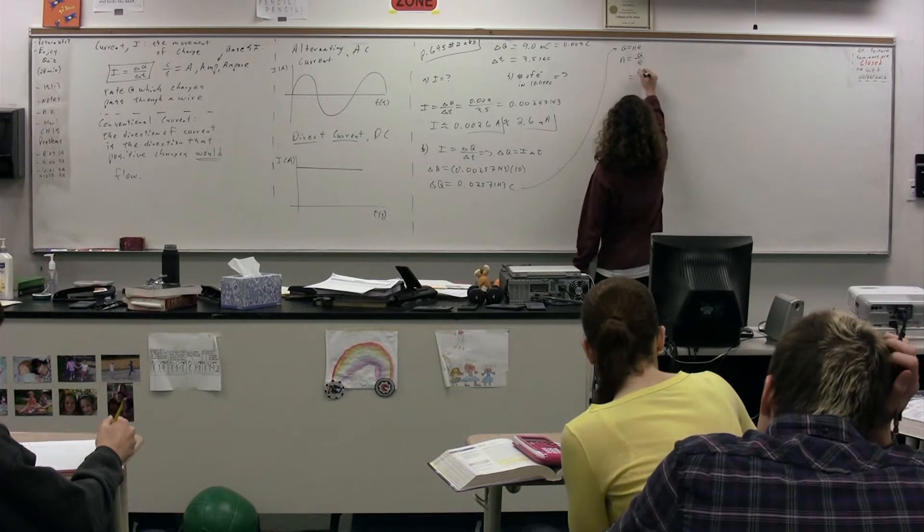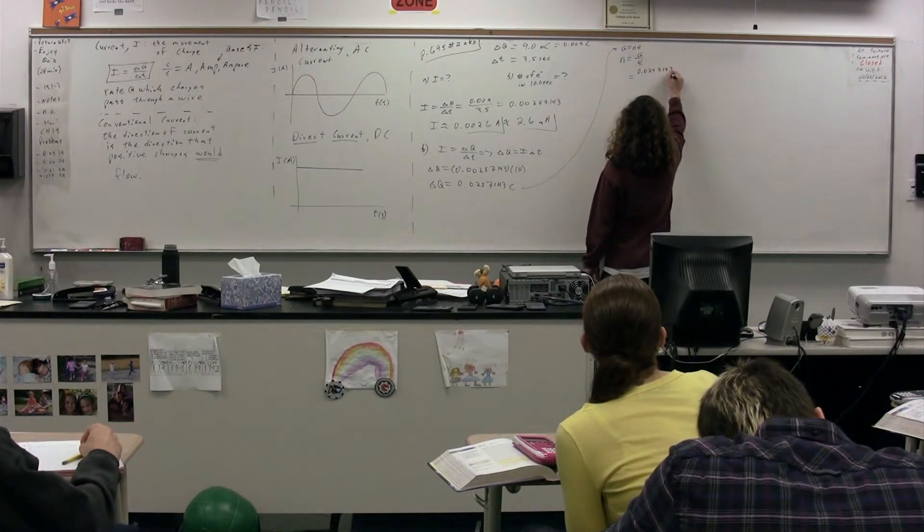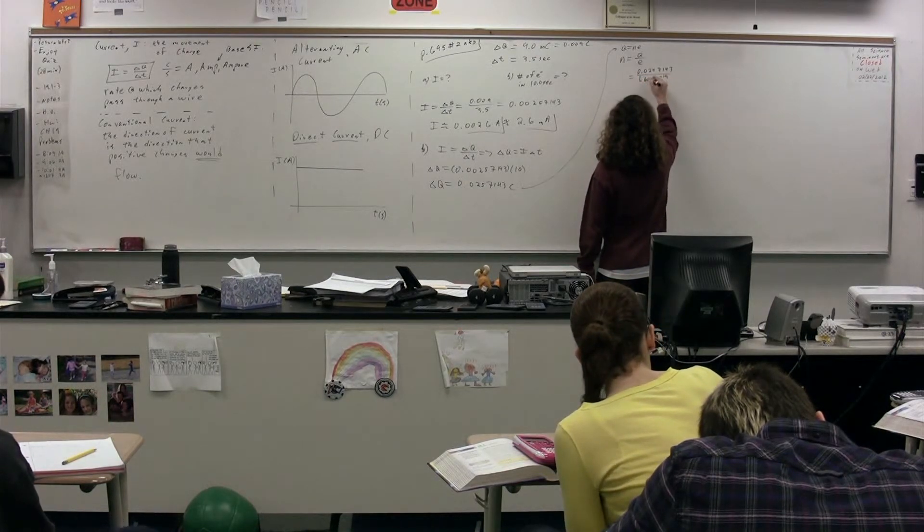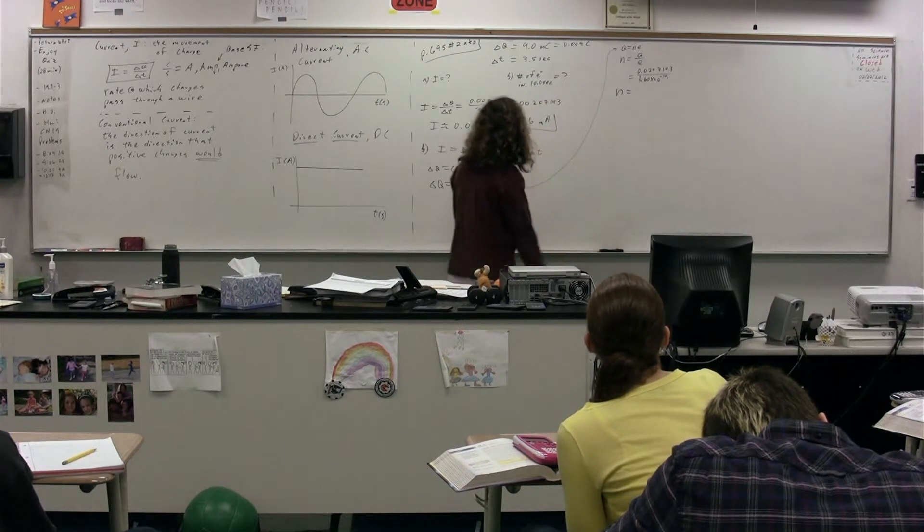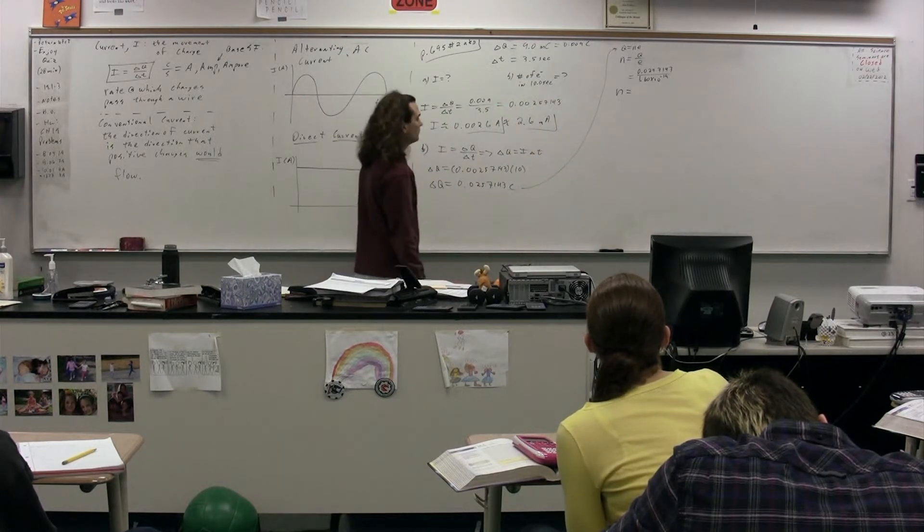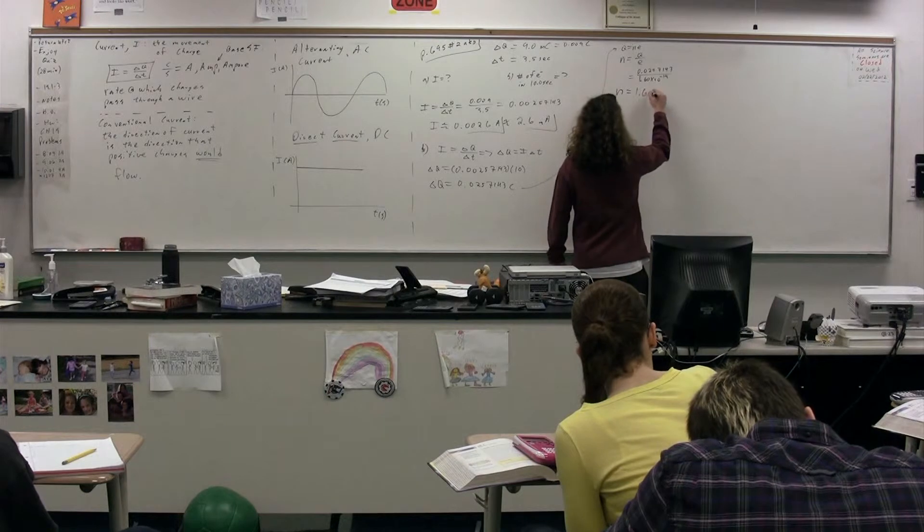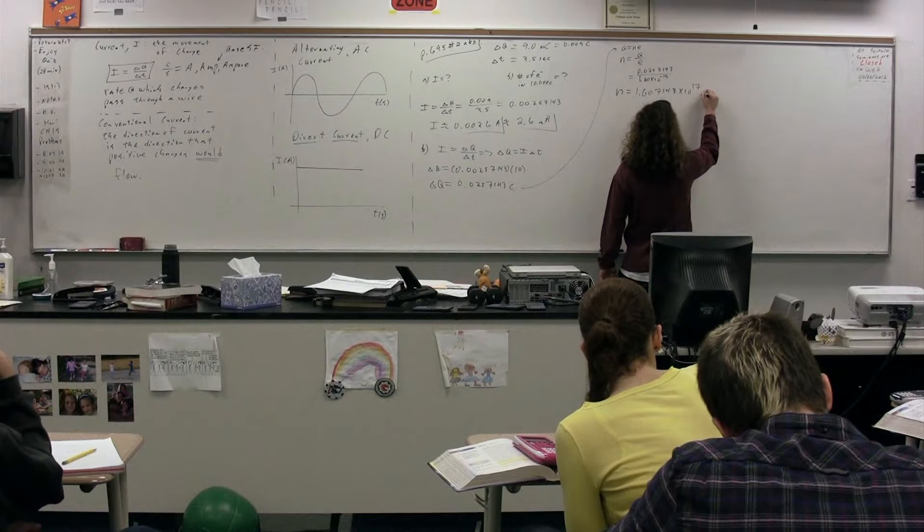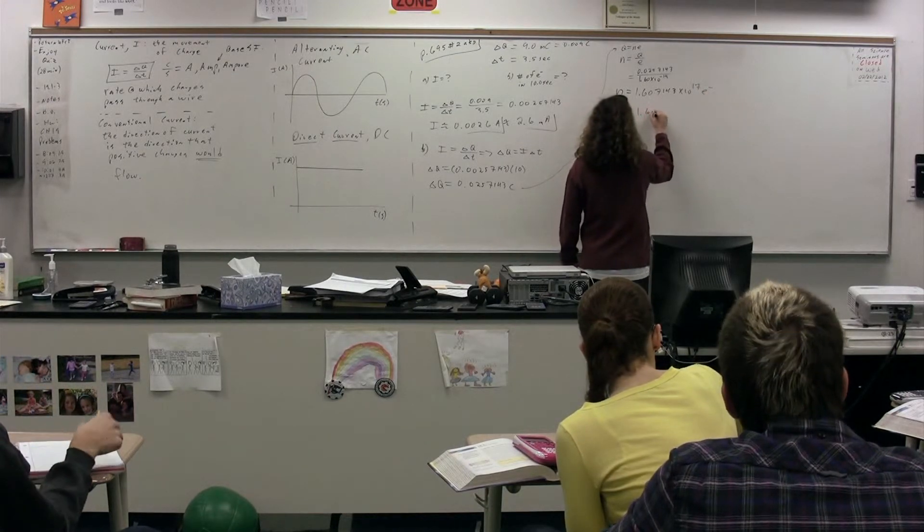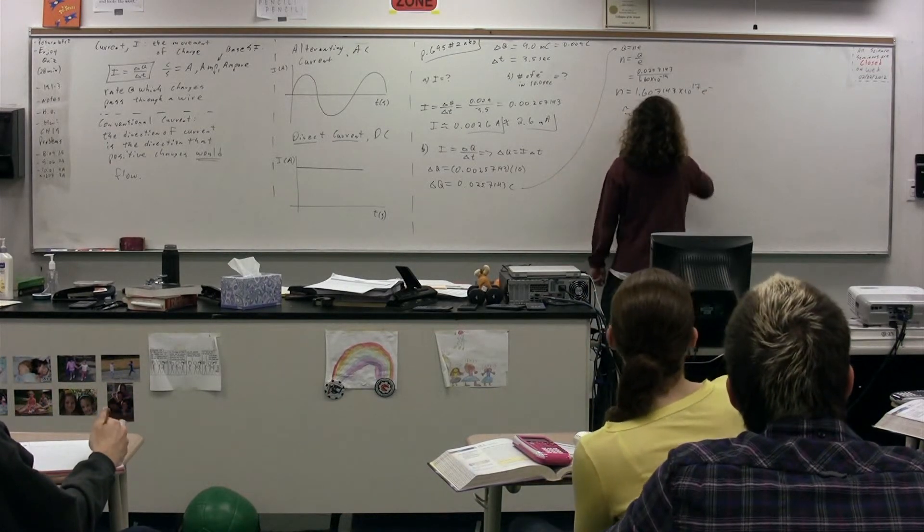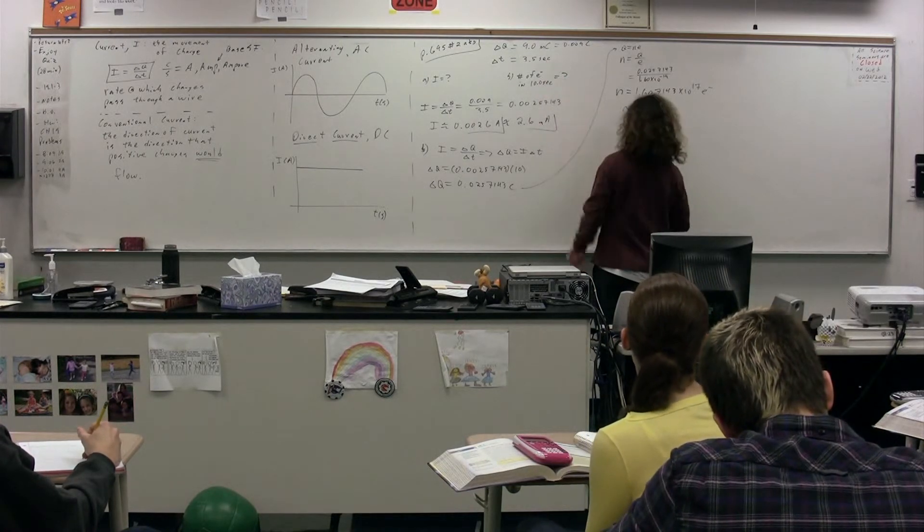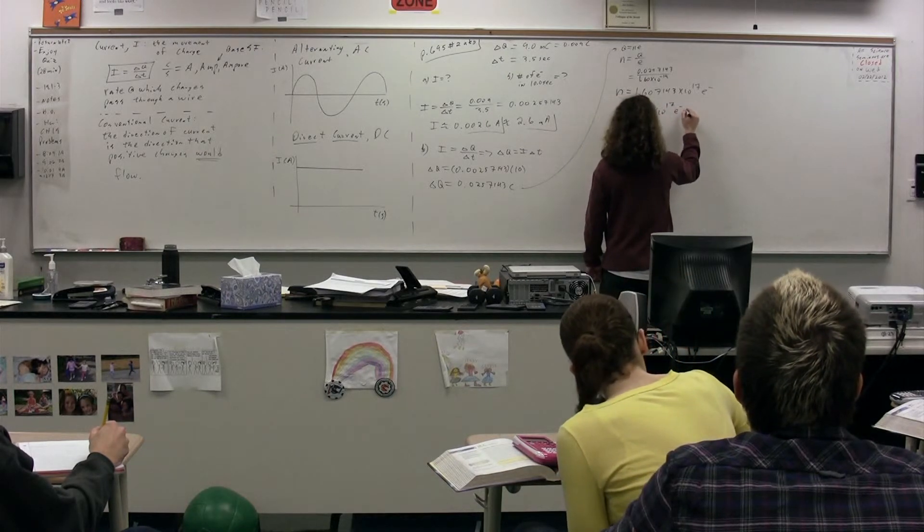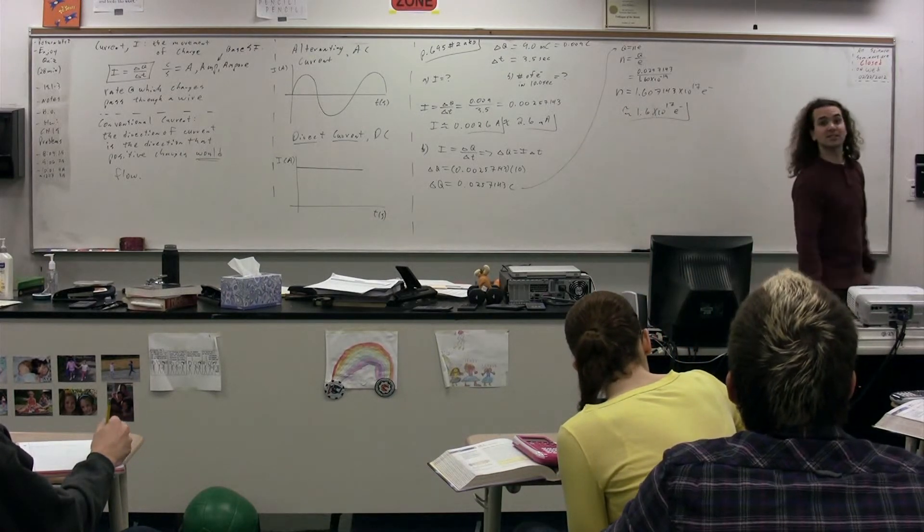So the delta q is 0.0257143 divided by the fundamental charge, 1.6 times 10 to the negative 19 Coulombs. 1.607143 times 10 to the 17th, and that's electrons. We only have two sig figs, 1.6 times 10 to the 17th electrons. I have a question.